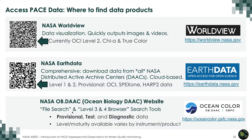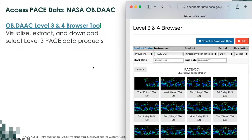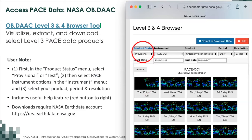At the NASA OB DAC, you'll find provisional, test, and diagnostic data — with which data level and data status available varying by instrument and product. The OB DAC Level 3 and 4 browser allows you to visualize, extract, and download Level 3 PACE data products. To use this browser, under the product status menu you must select 'provisional,' 'test,' or 'diagnostic,' then select the PACE instrument from the pull-down menu, followed by your product of interest, timeframe, and resolution. You also need a NASA Earth Data account to use this Level 3 and 4 browser.